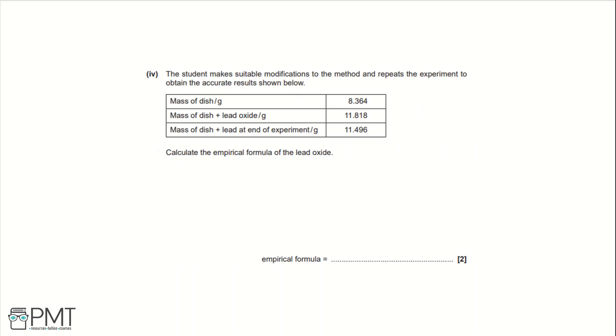Part 4. The student makes suitable modifications to the method and repeats the experiment to obtain the accurate results shown below. Calculate the empirical formula of the lead oxide. Firstly let's work out the ratio of Pb to O. So we're going to work out O as the mass of oxygen that's left. So that would be the difference of these two masses. And that is 0.322. So what I've done is I've done 11.818 minus 11.496. That equals 0.322. Then working out the mass of lead, that would be the difference of these two.